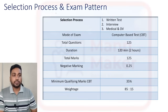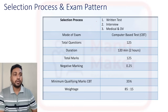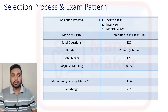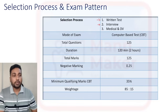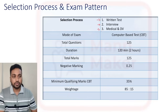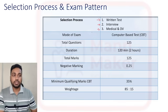First we are going to see the selection process and exam pattern for BL Probationary Engineer. Your selection process will be in three parts: first you need to clear the written test, which is CBT — computer-based test. After qualifying CBT, you will get a call for the interview round, and after clearing both steps, you will have medical and document verification.